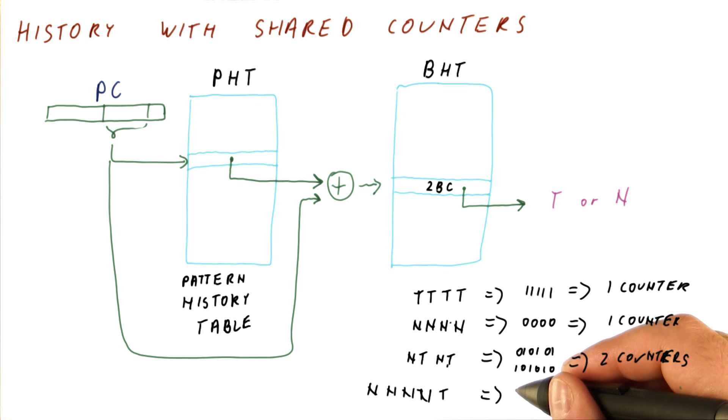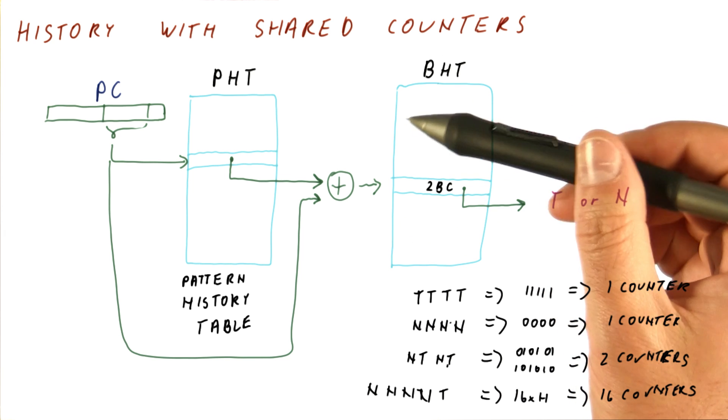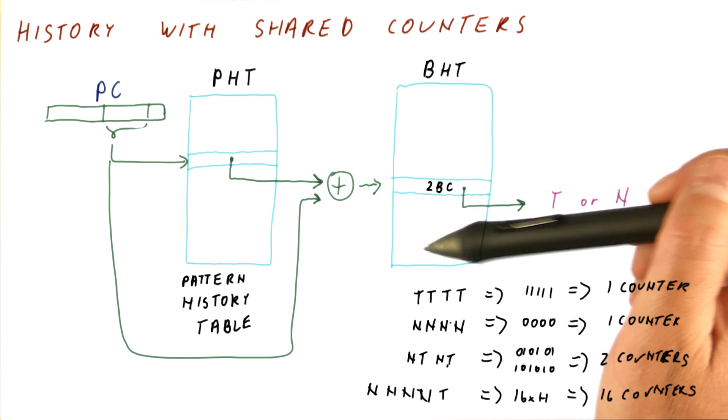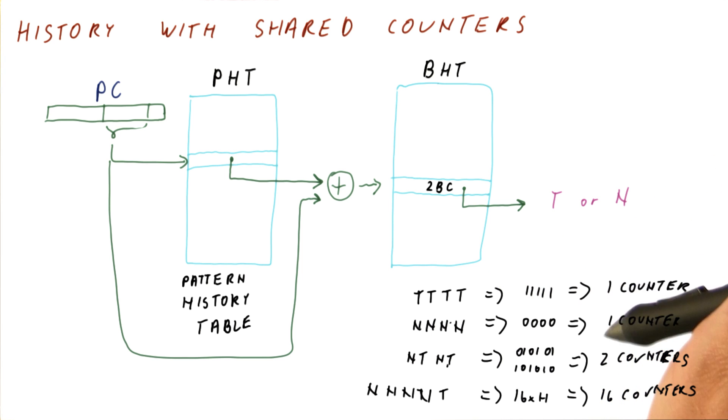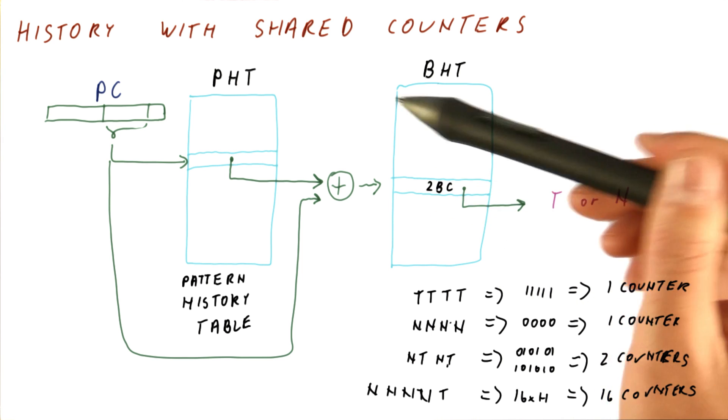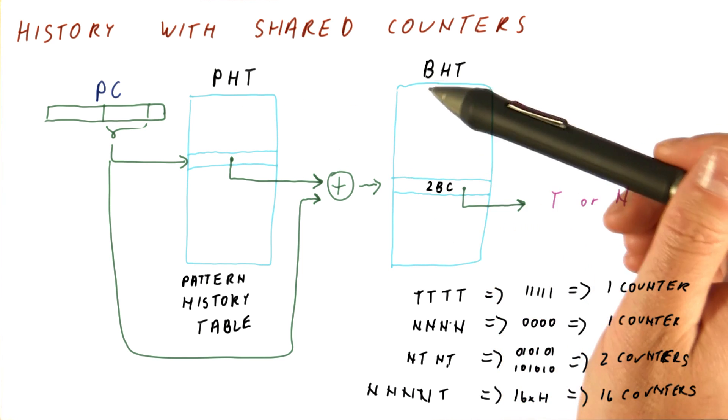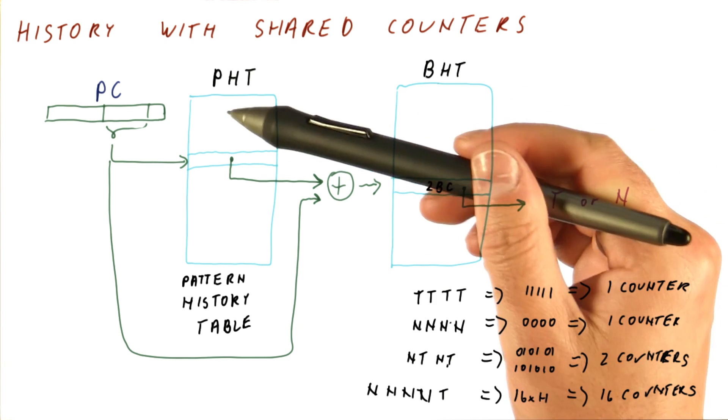where we will be using something like 16 histories and thus use 16 counters. In this organization, the branches that need more counters get them, and the branches that need relatively few counters get them. The only additional cost relative to just having the counters is the histories.